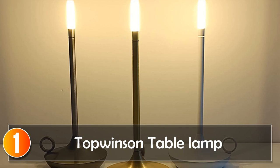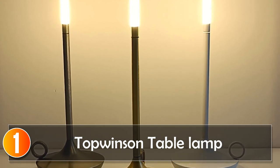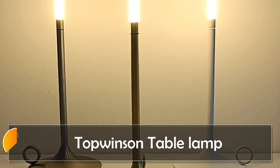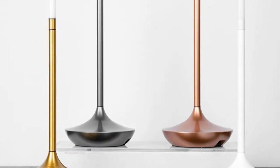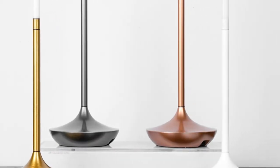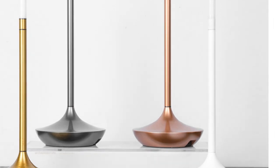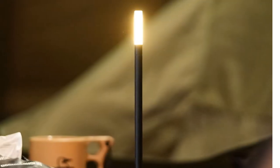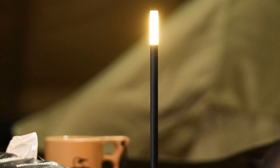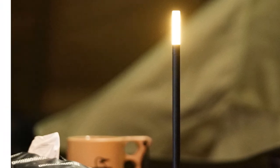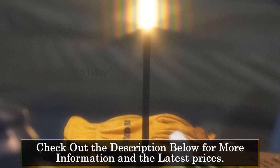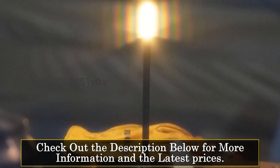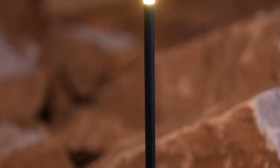At number one, the Topwinson Table Lamp is a versatile and stylish lighting solution suitable for bedrooms and other living spaces. This rechargeable wireless touch lamp offers convenience and portability, making it ideal for camping or as a creative decoration piece. Crafted from aluminum alloy and PMMA, the Topwinson Table Lamp showcases a contemporary design with a polished steel finish. Its touch on/off switch provides easy control, while the dimmable LED bulbs allow you to adjust the brightness to your liking.